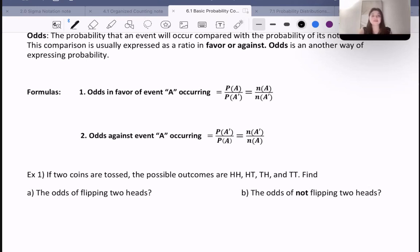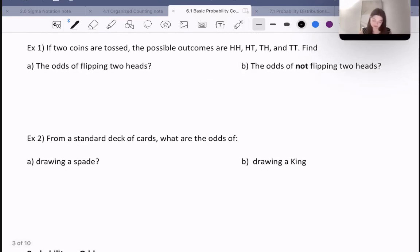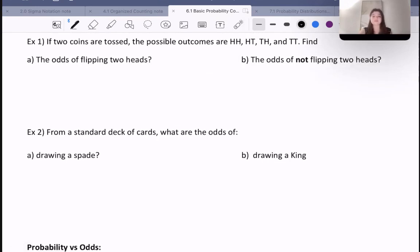Let's do some examples. If two coins are tossed, the possible outcomes are heads-heads, heads-tails, tails-heads, and tails-tails.